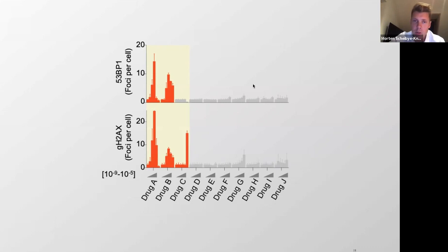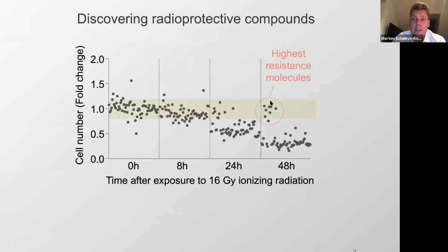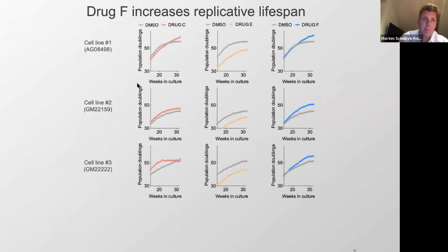One readout was to see if the drugs would protect against ionizing radiation. A number of compounds actually protected cells from a massive dose of 16 gray ionizing radiation, which normally kills 80% of cells. Cells treated with these compounds became completely immune to this dose. One of the lead compounds — drug F — was tested in primary fibroblasts looking at replicative senescence, and it appeared to increase the replicative lifespan of cells in culture.